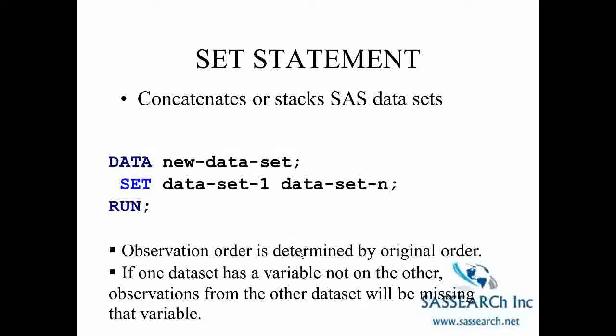Also, if one dataset has a variable that's not on the other, observations from the other dataset will be missing for that variable. For example, if we concatenate a male dataset and a female dataset, and the female dataset has a variable called LMP (last menstrual period), that variable would appear on the combined dataset, but for all male observations, LMP would be missing. All variables appear on the new dataset, but they won't necessarily have complete data.